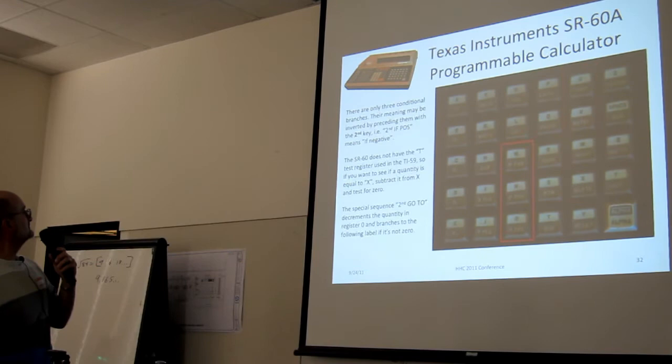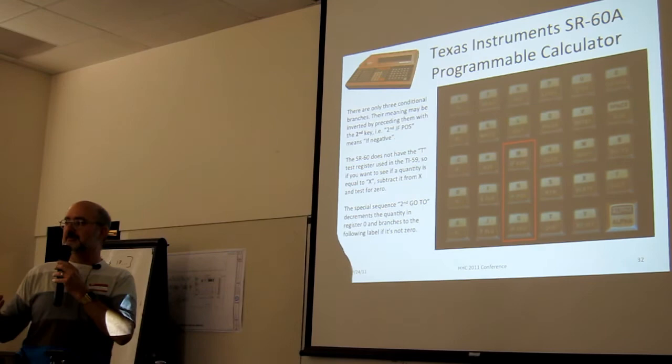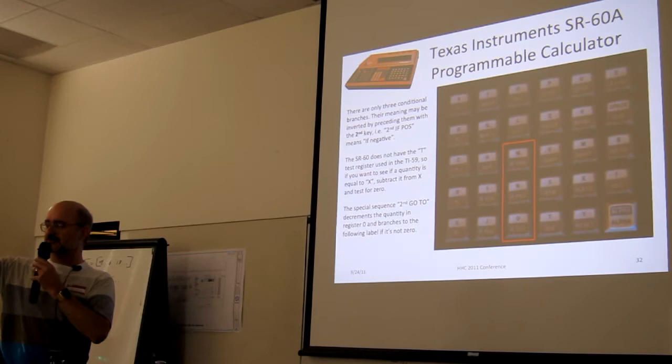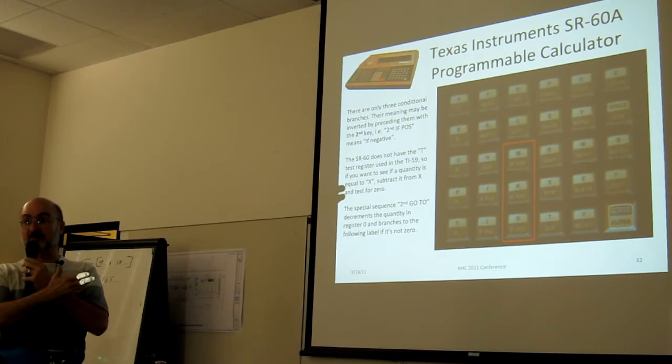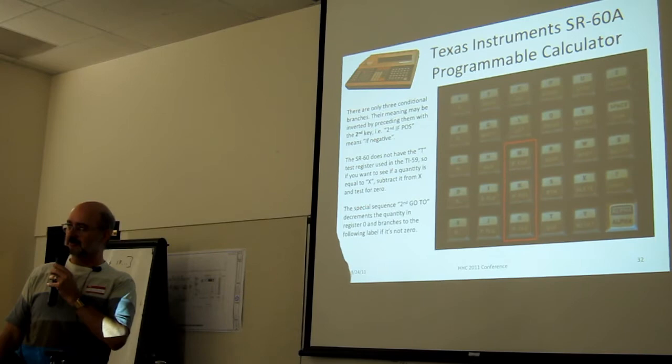There are only three conditional tests. If error, if positive, and if zero, and you can invert the meanings of them with a second key, so you get if no error, if negative, if not zero. Now, in our HPs, if we want to test to see if something's equal to five, we put five in the stack, push it in, put five in X, say if X is equal to Y. Very simple. The TI-59, which used the same processor, had a special T register. You put a comparison in T and say if X is equal to T. This is like assembly language. If you want to see if something's equal to five, you subtract five from it and see if the result is zero. Destructive, clunky, but hey, it was 1976.